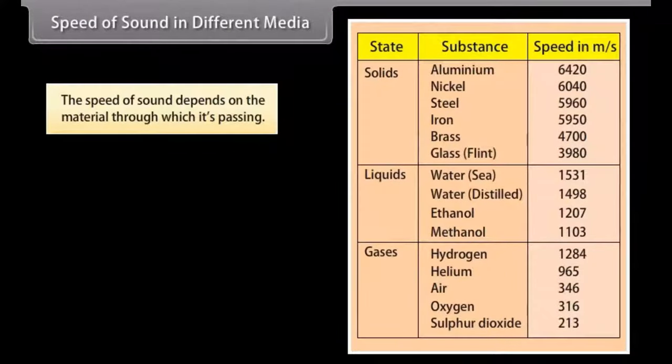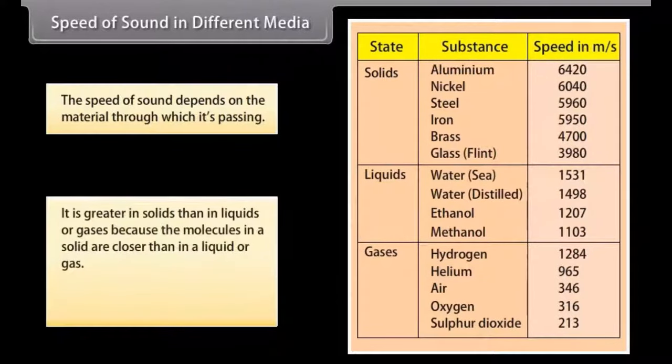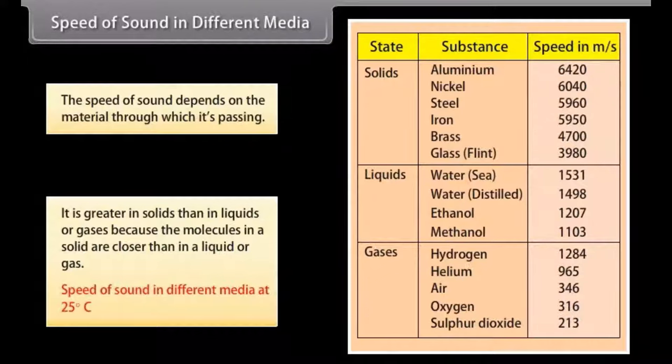Speed of sound in different media. The speed of sound depends on the material through which it is passing. It is greater in solids than in liquids or gases because the molecules in a solid are closer than in a liquid or gas. In this table you can find the speed of sound in different media at 25 degrees Celsius.